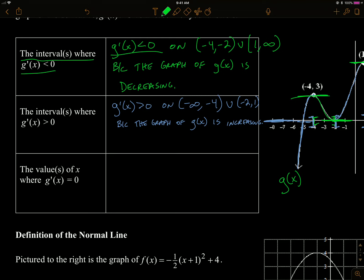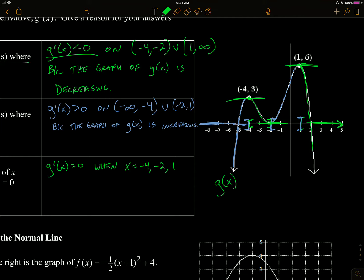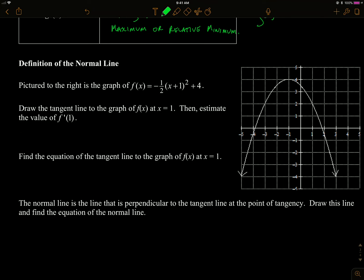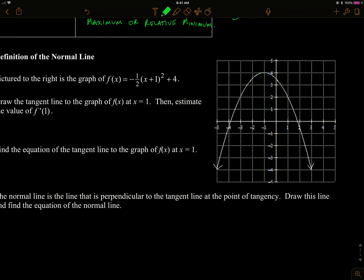Where is the derivative equal to zero? Where is the slope of the tangent line zero — at any maximums or minimums? g prime of x equals zero at specific x values: when x equals negative four, negative two, and one, because g of x has a relative maximum or relative minimum at those points.